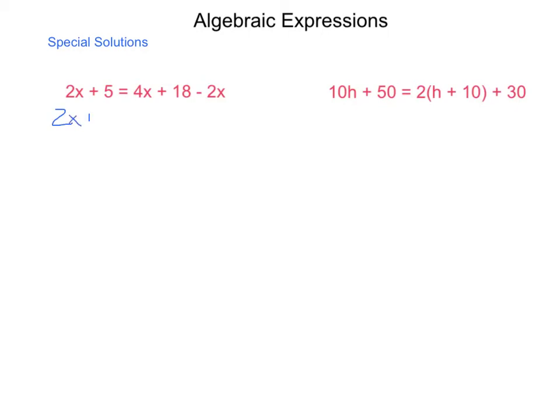For instance, here, on the right-hand side, I have a 4x and a negative 2x. So, I will go through the process of combining those. Left side does not change. 2x plus 5 is equal to 4x minus 2x is 2x plus 18. Next, we gather all of our variables to one side of the equal sign. So, I am going to subtract 2x from the left and from the right using the subtraction property of equality. And, on the left, these become a 0. On the right, these also become a 0. So, what I have remaining is 5 is equal to 18.